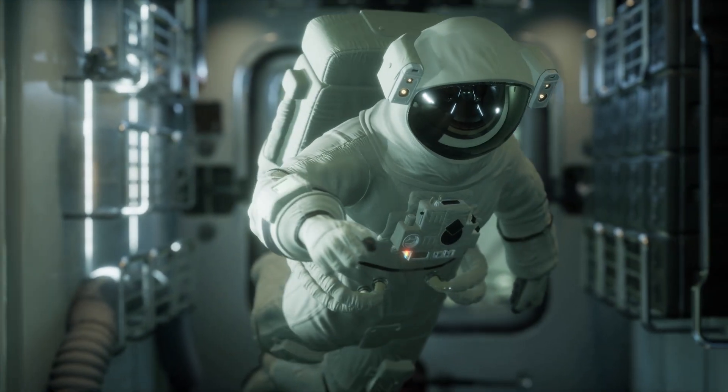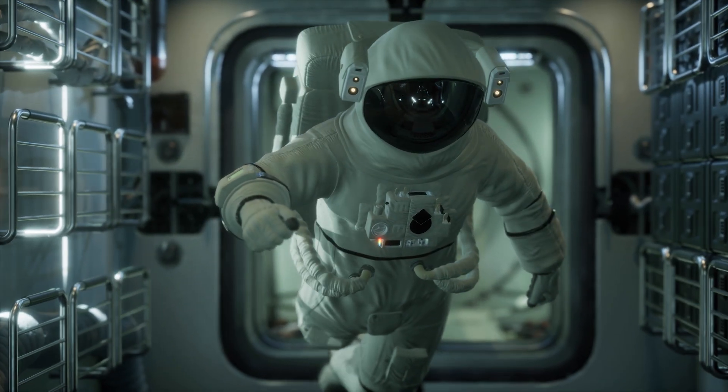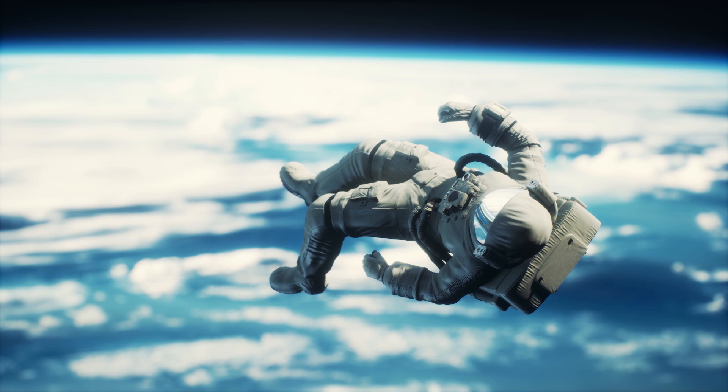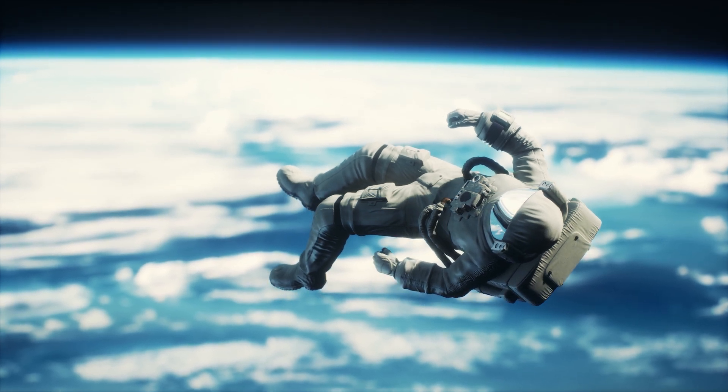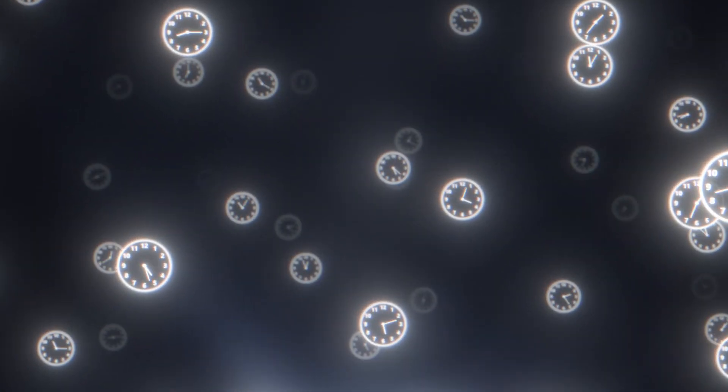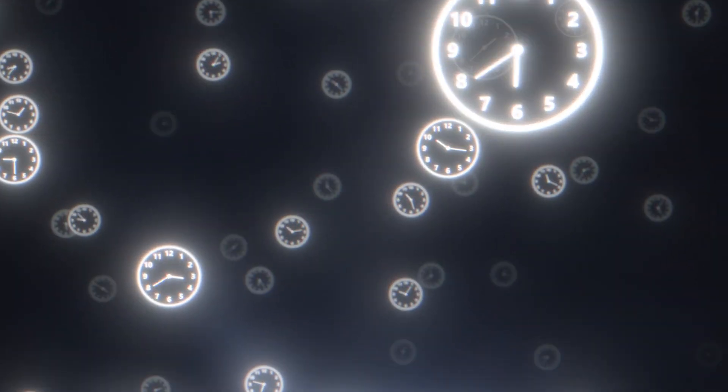Einstein demonstrated that huge objects like our planet create a strong gravitational field that slows down time. For example, the incredible mass of our planet bends time, causing it to flow slower for a person on the surface than for an astronaut in orbit. The difference is quite minimal and can only be measured using atomic clocks.